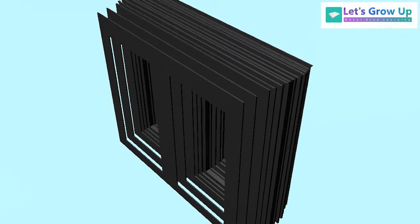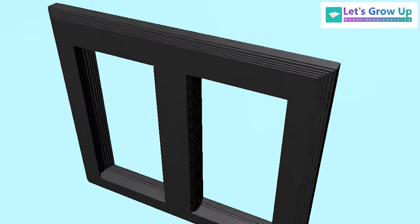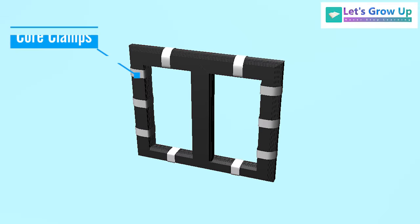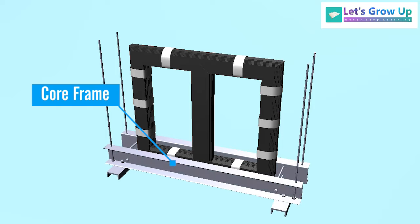The thickness of the transformer core laminations is usually in the order of 0.25 millimeters to 0.5 millimeters. Core clamps: Steel frame is used to hold all the laminations of the core.